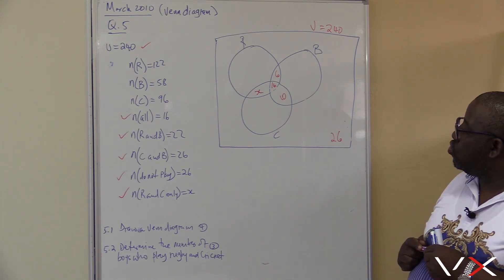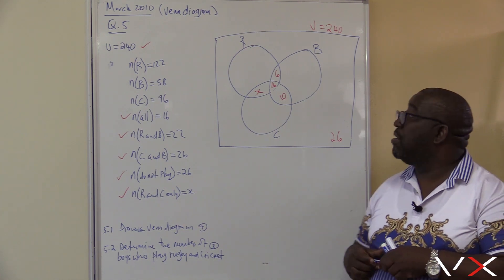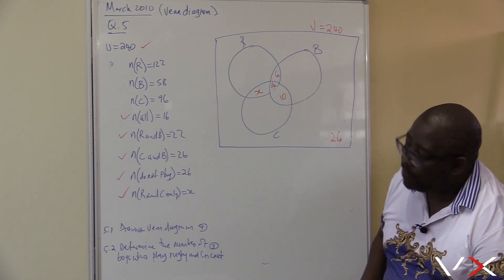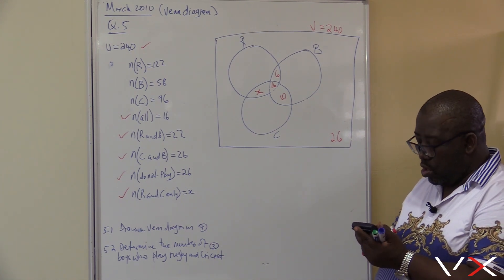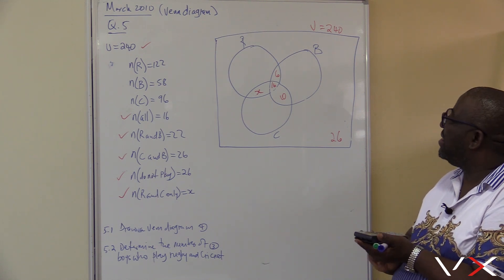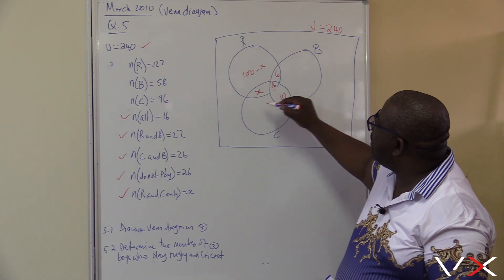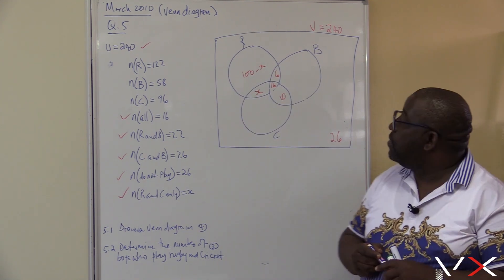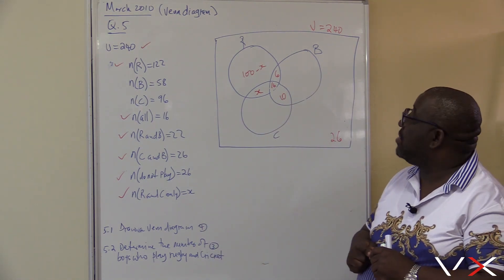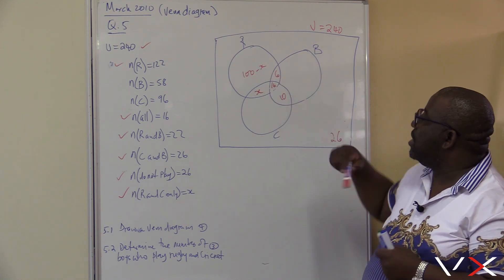Are we done with all those doing two or more sports? Yes. Let's go to those playing only one sport, starting with rugby. How many boys are playing rugby? There are 122. The total for the rugby circle must be 122, so it's 122 minus 16 minus 6 minus X, which gives us 100 minus X. When you add all regions in the rugby circle, you must get 122.